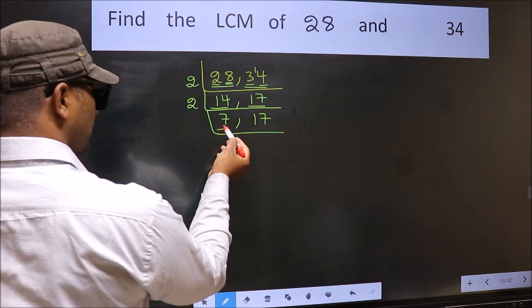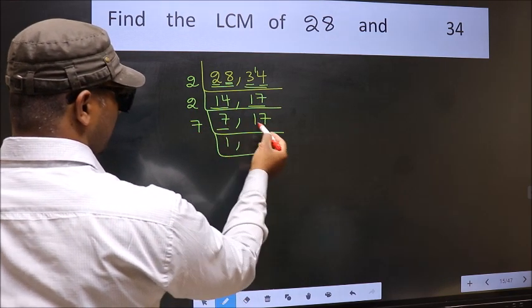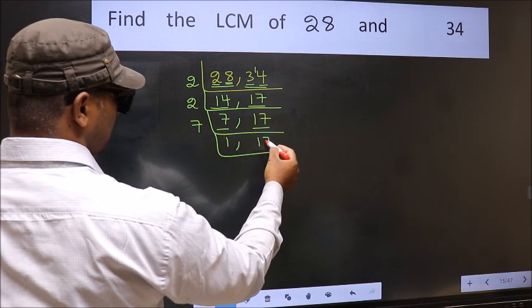Now here we have 7. 7 is a prime number, so 7 times 1 is 7. The other number 17, not divisible by 7, so we write it down as it is.